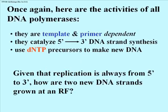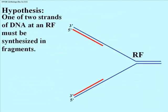We know that all DNA polymerases catalyze 5' to 3' strand growth, and that no DNA polymerase can synthesize DNA 3' to 5'. Since this is true, how can we rationalize replication of both strands against their templates at a replication fork? The only reasonable hypothesis was that while one strand could be synthesized continuously as the replication fork keeps unwinding, at least one DNA strand would have to be synthesized in pieces or fragments that would later be stitched together.